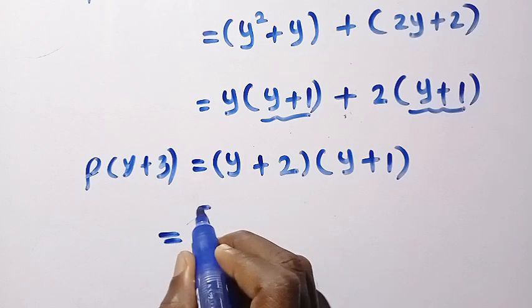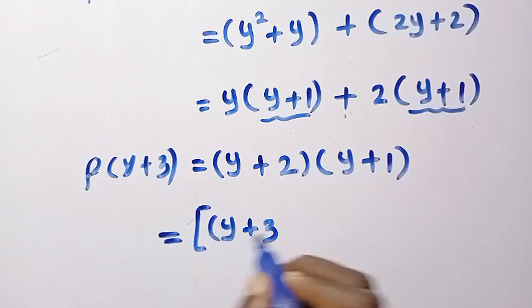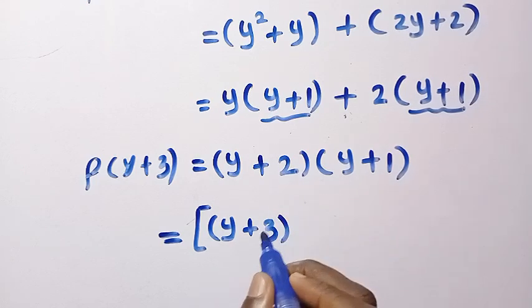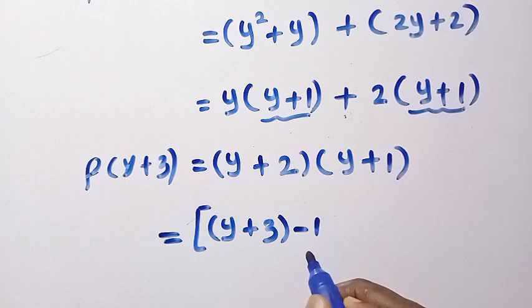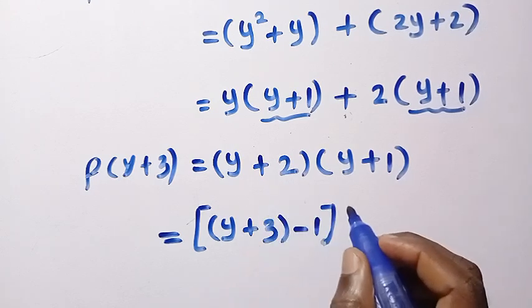By manipulation, we have y plus 3 that we need. But initially, it was y plus 2. Adding 1 to this, it means we are going to subtract 1 outside. So all of this gives y plus 2.